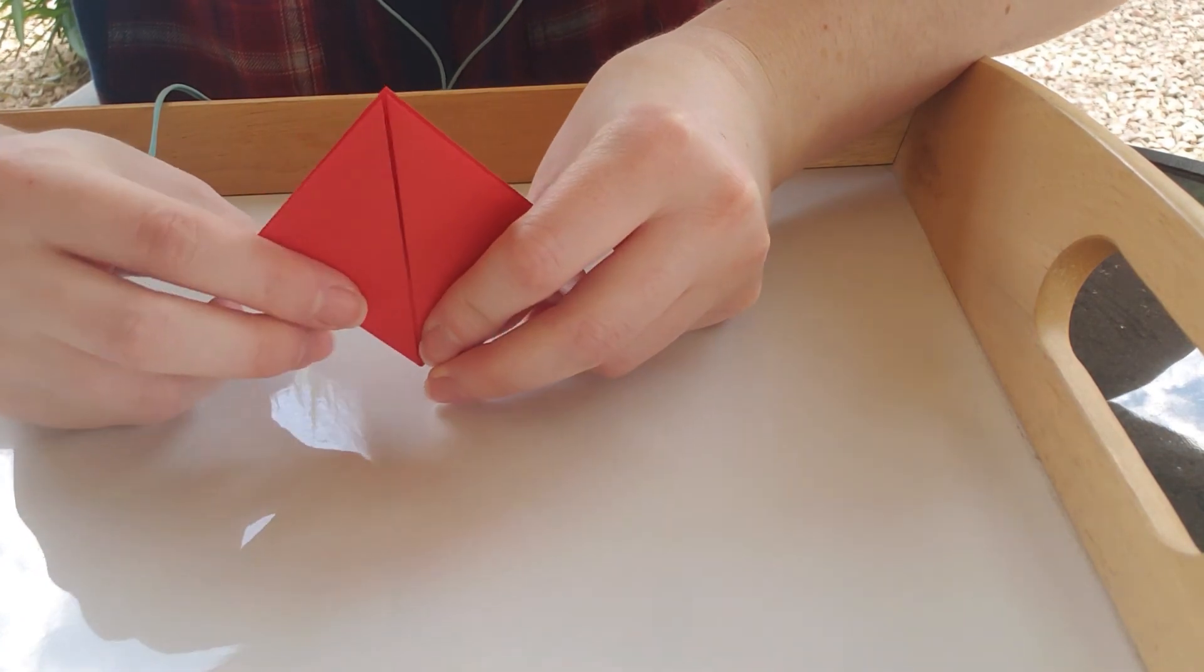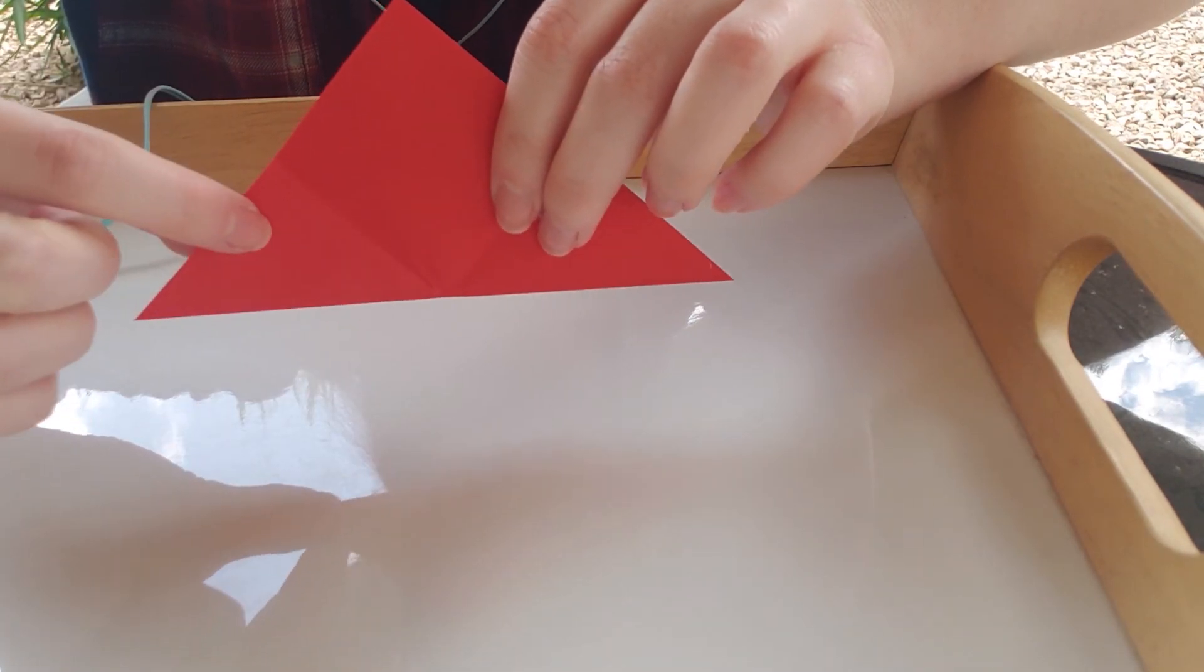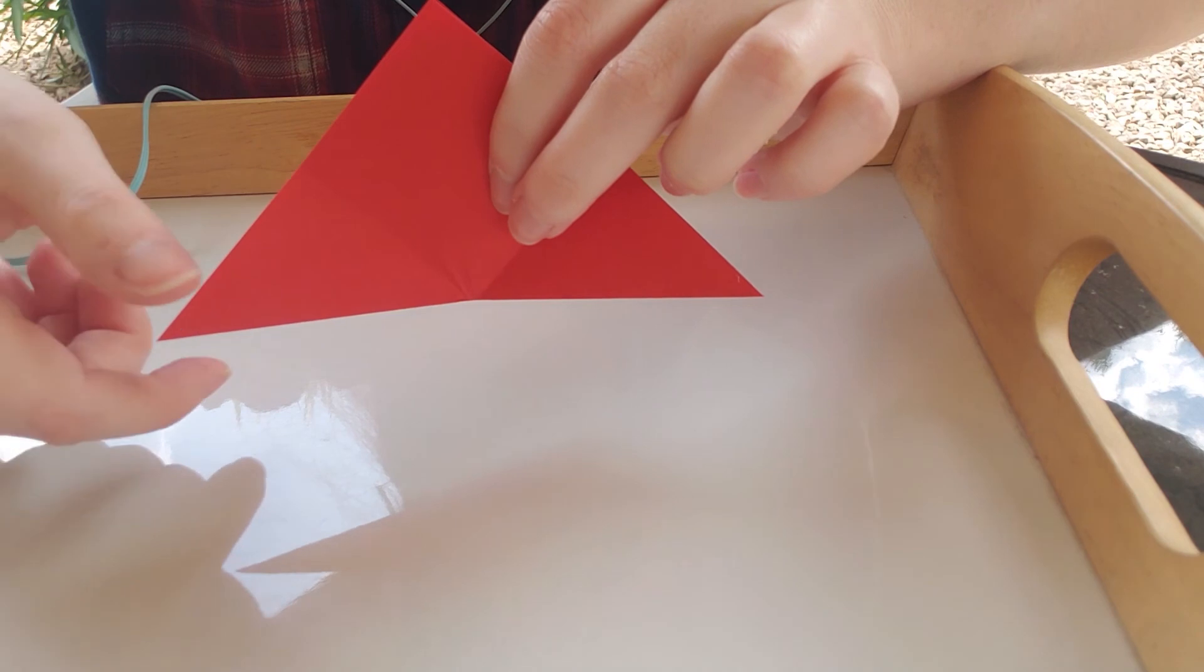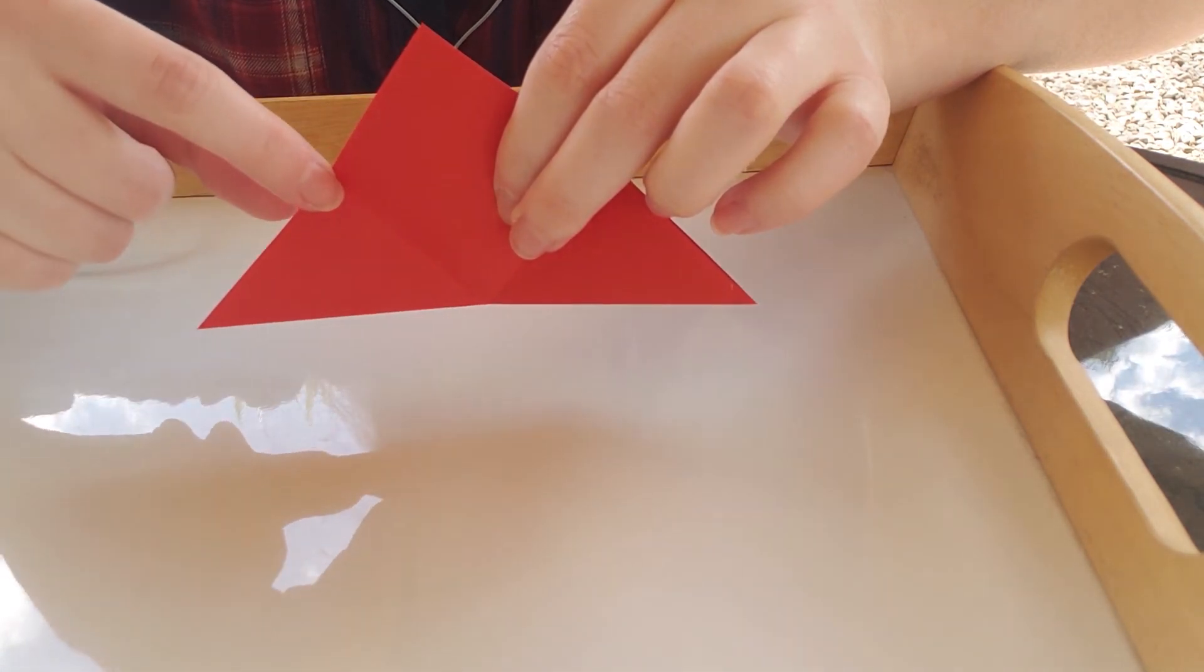Now once we have this diamond we're actually gonna unfold it. We just want to use these crease lines on both sides. So we're going to take our ends and fold them up so that they run along this crease line.